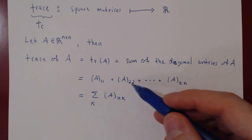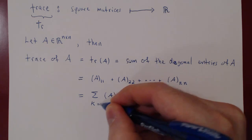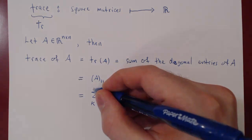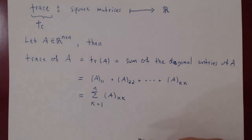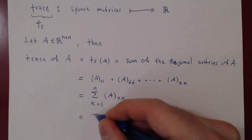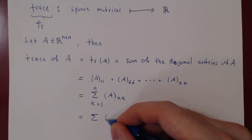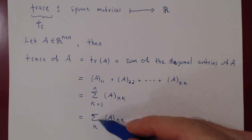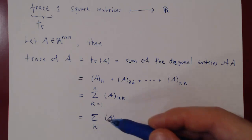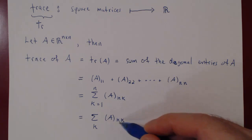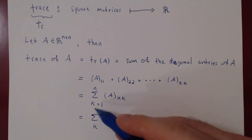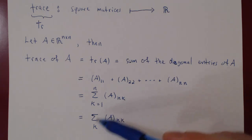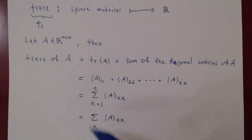k starts with 1 and ends with n. So k begins with 1, the first entry on the main diagonal, and as A is an n by n matrix there are n entries on the main diagonal. We can write this more compactly by dropping the bounds of summation, simply writing the sum of A_{kk} over k. This always means summing over all possible values of k — add every entry of A that lies on the main diagonal. That is how you will think of the trace of A when you want to prove its properties.